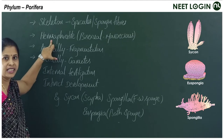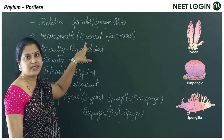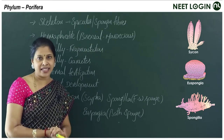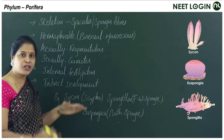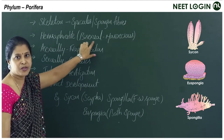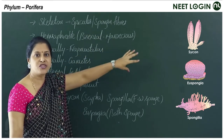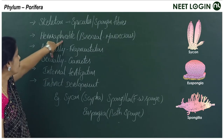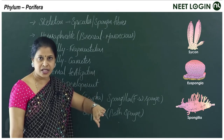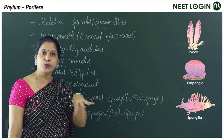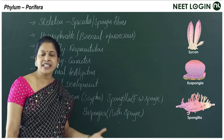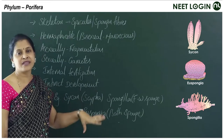Regarding sexuality, poriferans are hermaphrodites — the sexes are not separate but united. They are also called bisexual or monoecious. A single sponge can produce both male and female gametes.